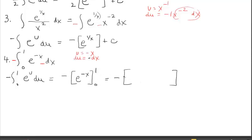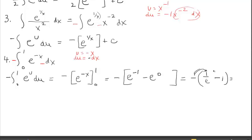Evaluating the anti-derivative at 1 and 0: negative times e to the negative 1 minus e to the zero. Cleaning up: that's negative times one over e minus 1. Distributing the negative gives 1 minus 1 over e. You could also find a common denominator and write it as e over e minus 1 over e, combining into a single fraction — but taking it to 1 minus 1 over e is fine.